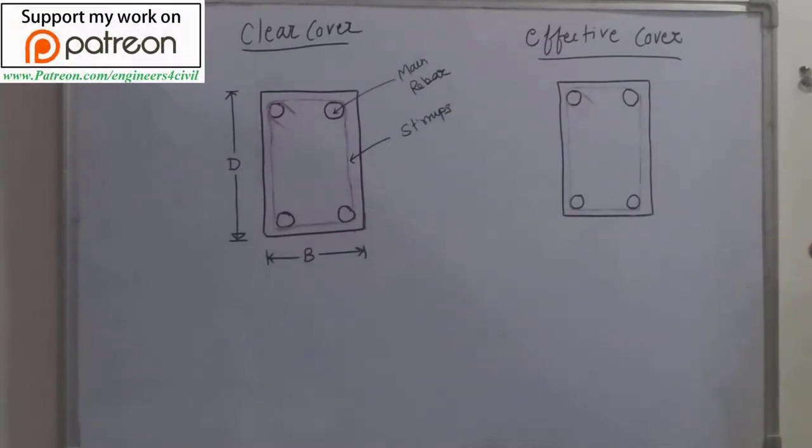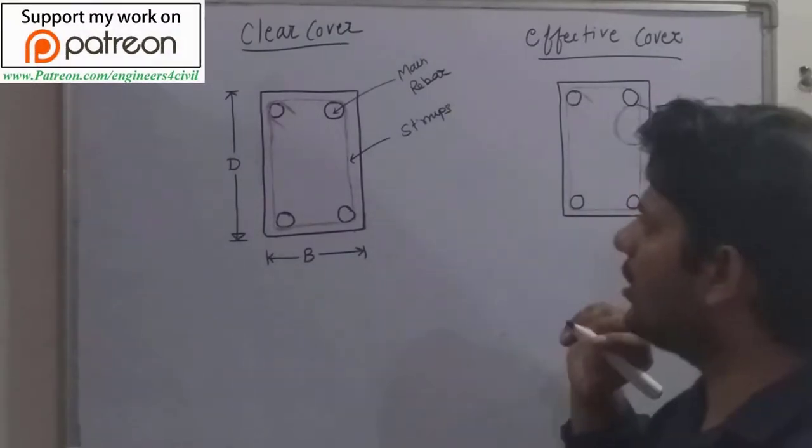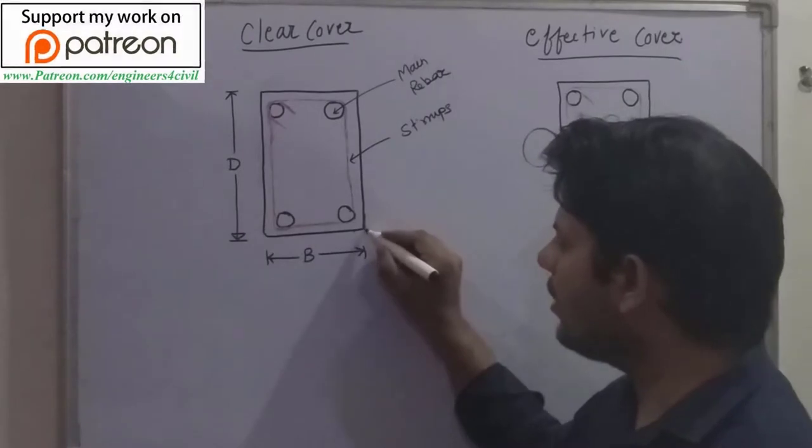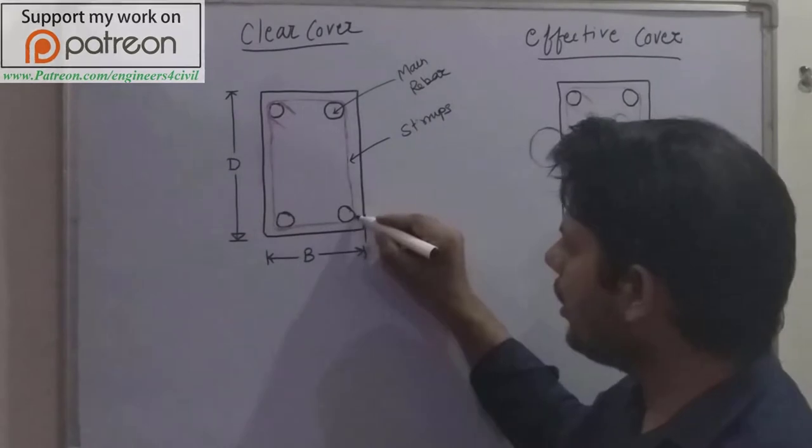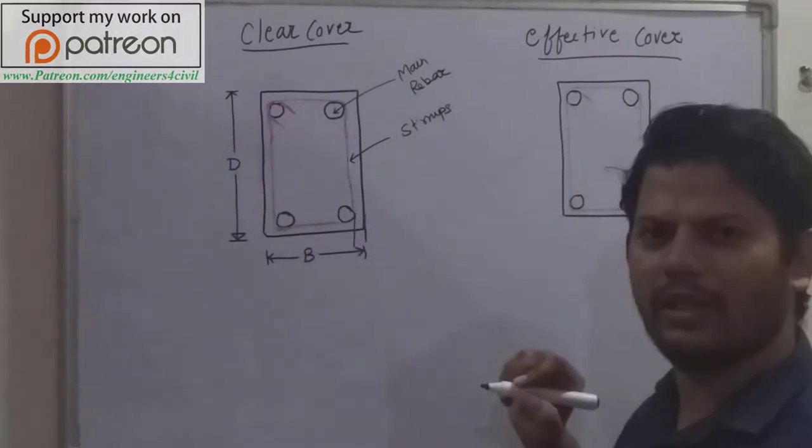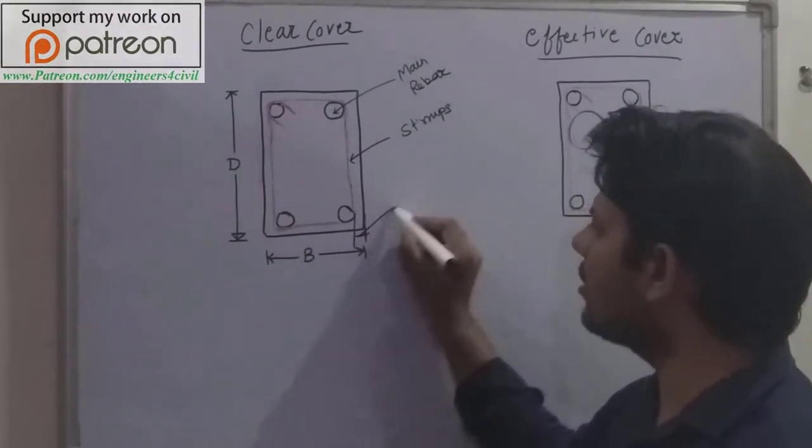So what is the clear cover? Clear cover is the distance between the outer edge of the beam and the outer edge of the main reinforcement. This distance is known as clear cover.